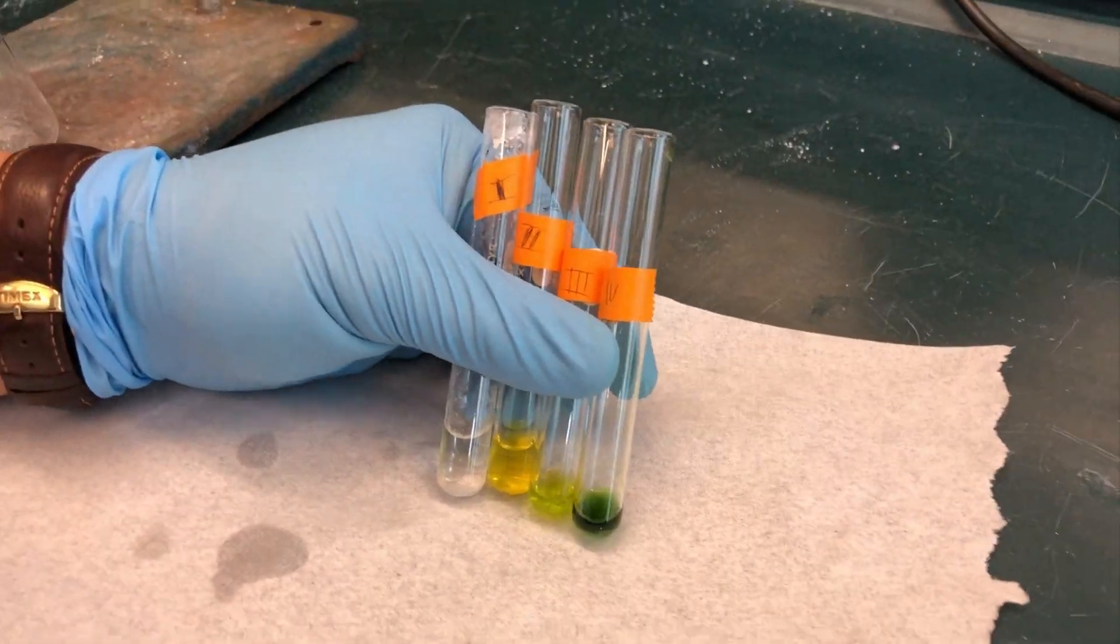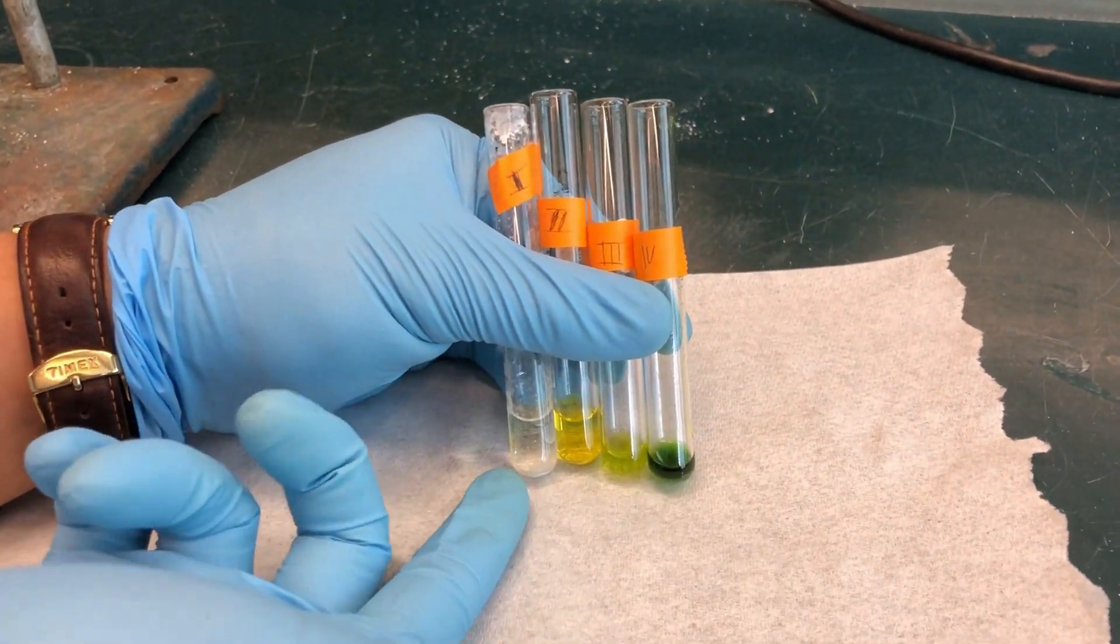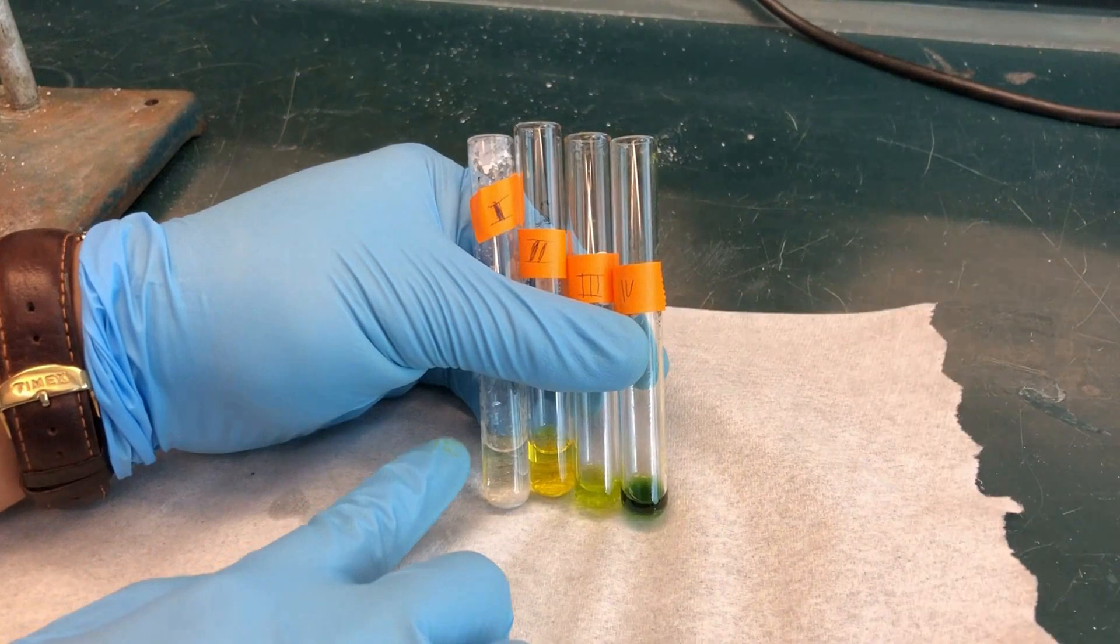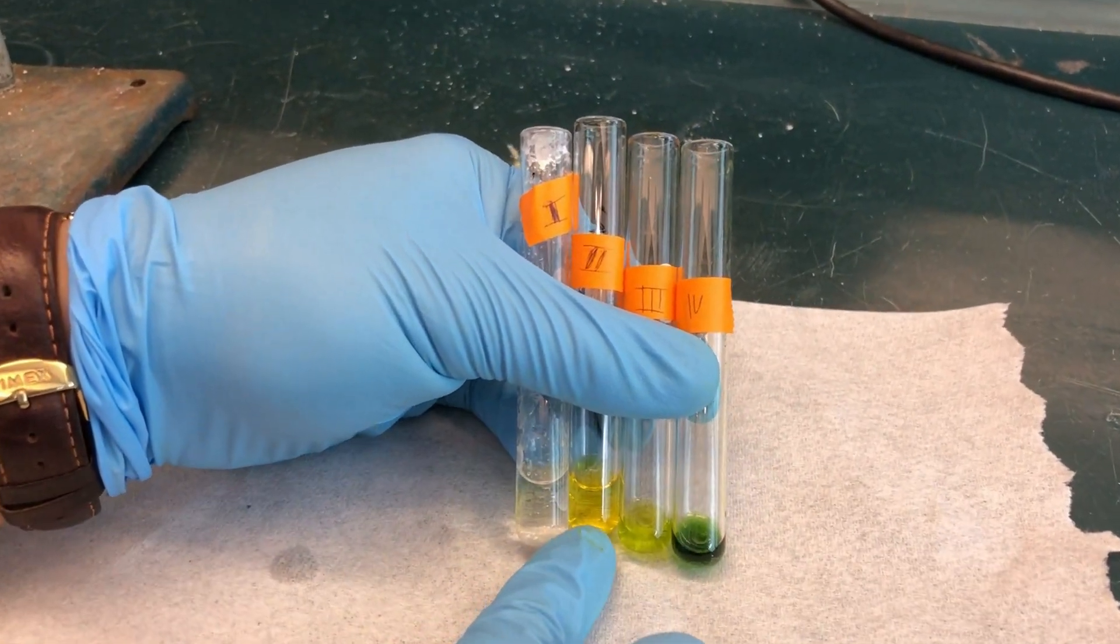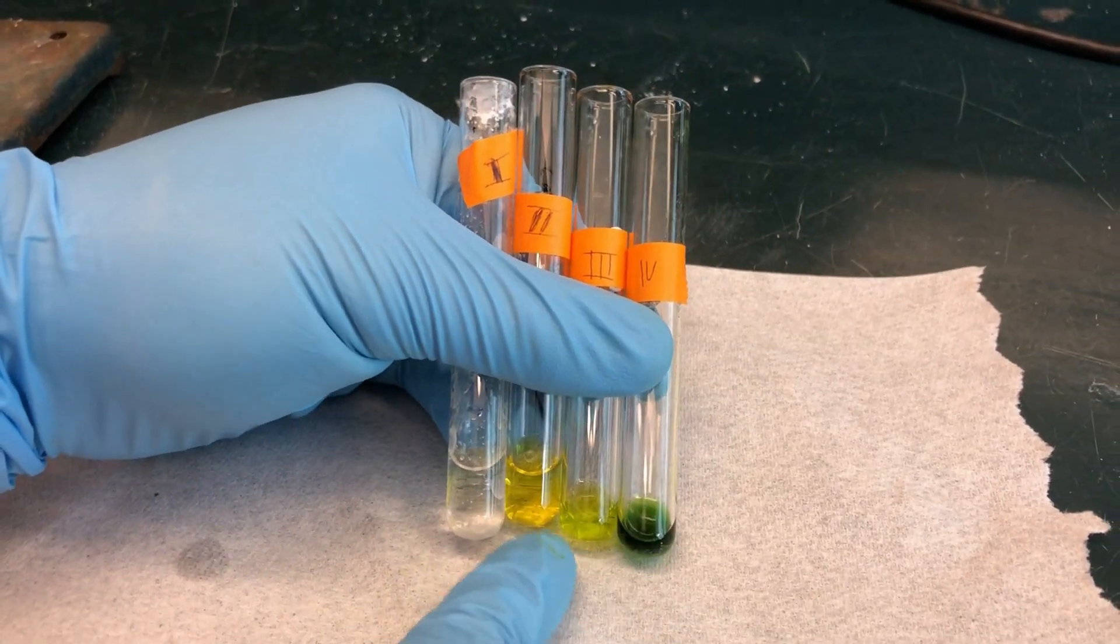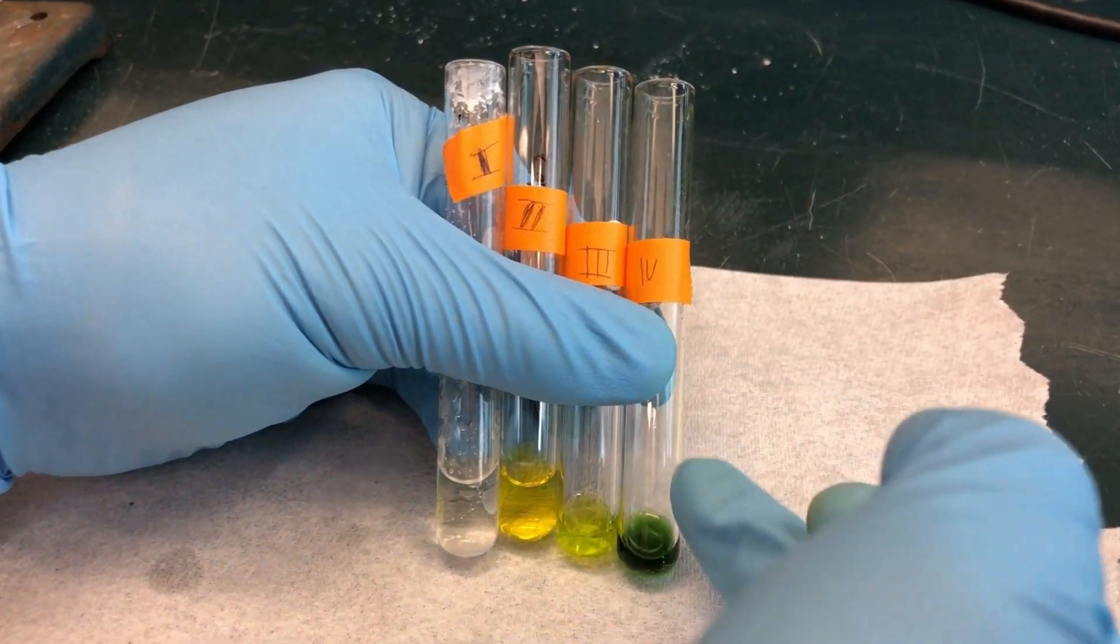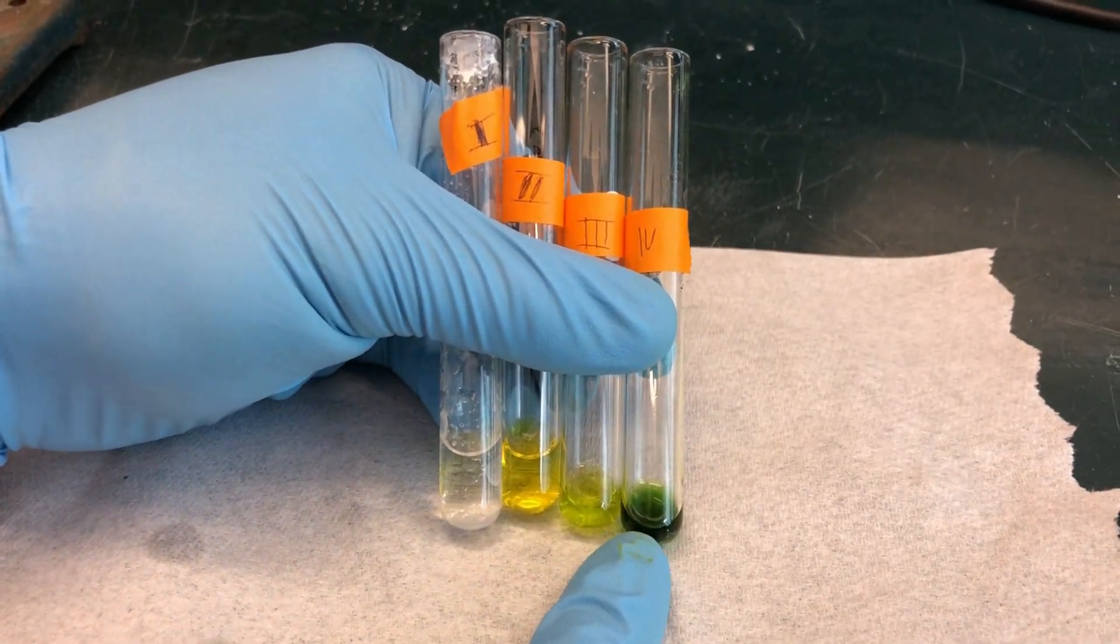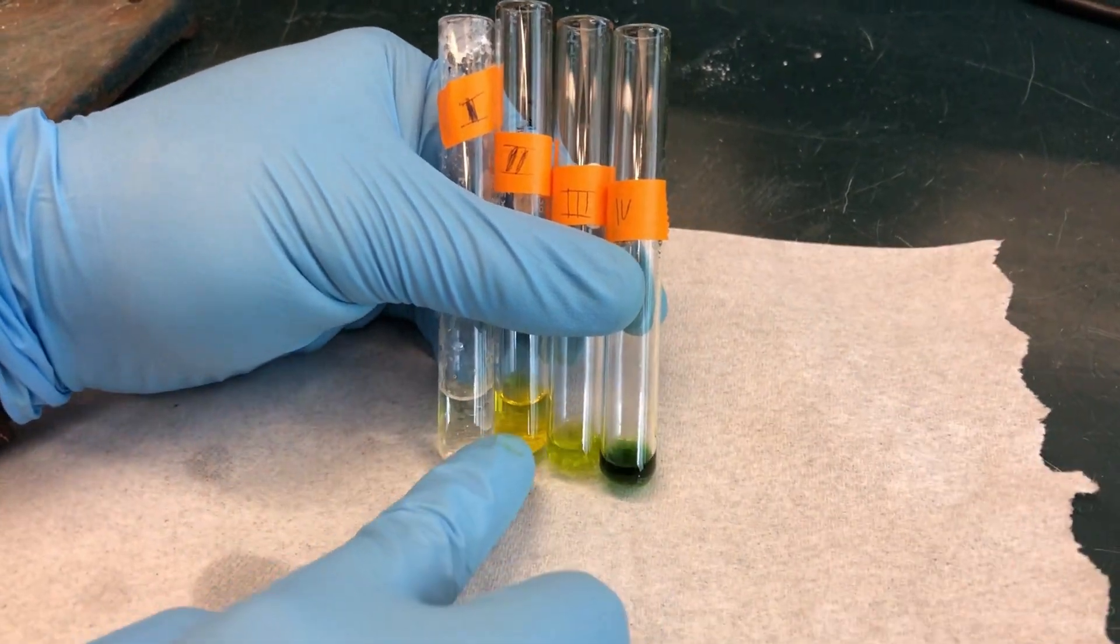Here you can see our four fractions. Test tube 1 has the petroleum ether, which is colorless. Test tube 2 has our yellow pigment. The intermediate is test tube 3. You can see it is between the yellow and the green color. And test tube 4 showing the green pigment. Test tube 2 and 4 would be used in the following TLC lab, which is not covered in this video.